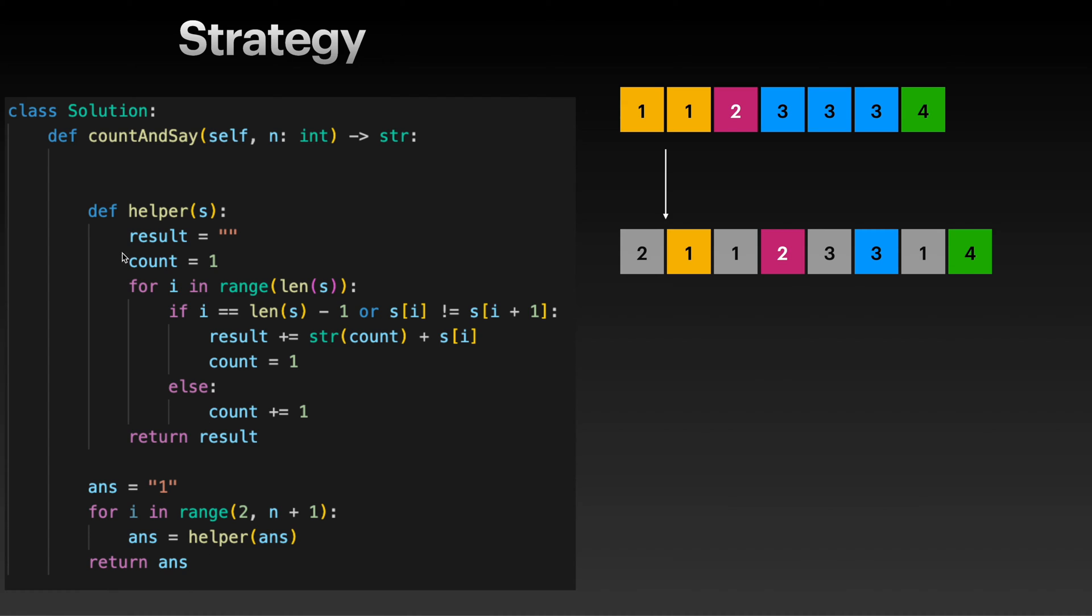Let's look at the helper function. We have a local variable result, this is an empty string, and we have a count variable that is 1. And then basically we will be running a for loop. So if you look at here, initially we have 1, right? And then we look at the next coming element, that is this one.